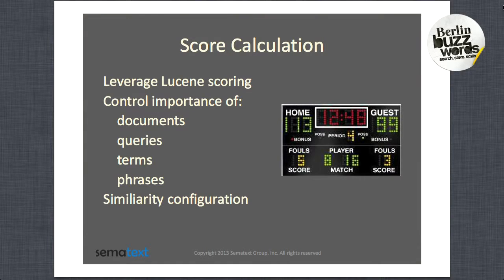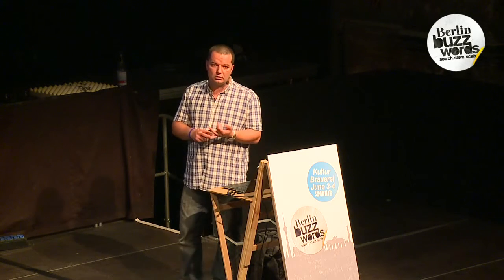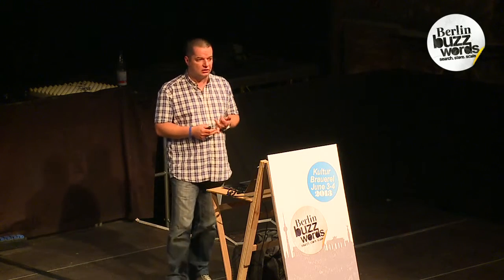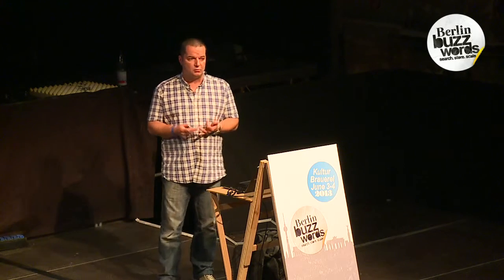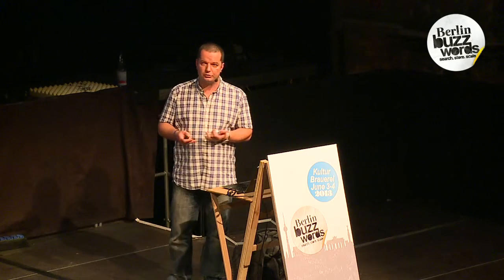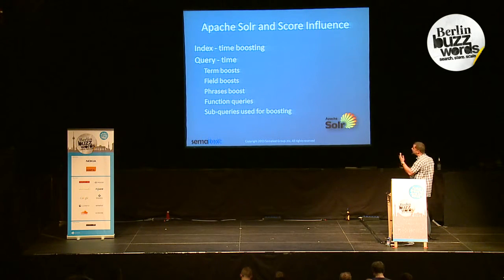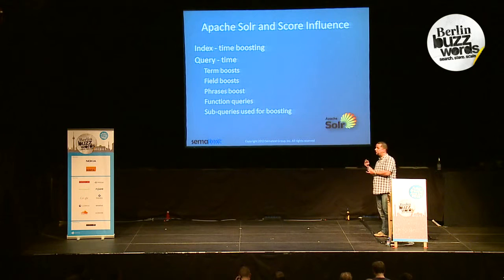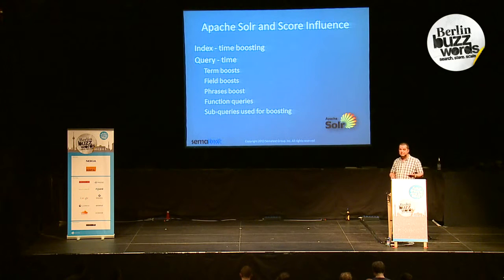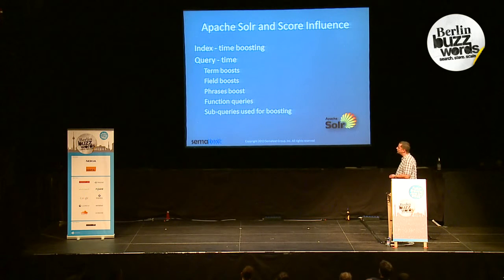In terms of score calculation, we look for controlling the importance of documents, queries, terms, phrases. We look for the possibility of leveraging not only the standard TF-IDF similarity, but also the newest ones introduced in Lucene 4.0, like BM25. In case of Solr, we have index time boosting, query time boost — which we can apply to terms, fields, phrases — and we can use function queries and subqueries to alter the relevance.